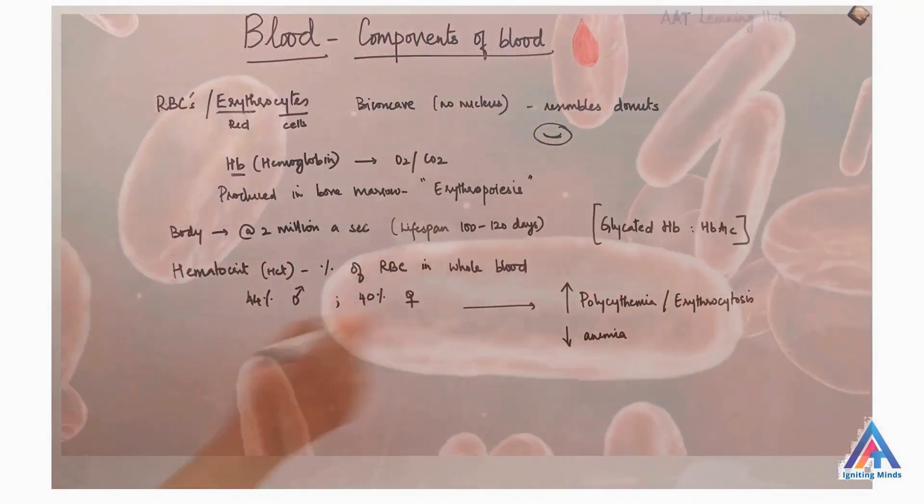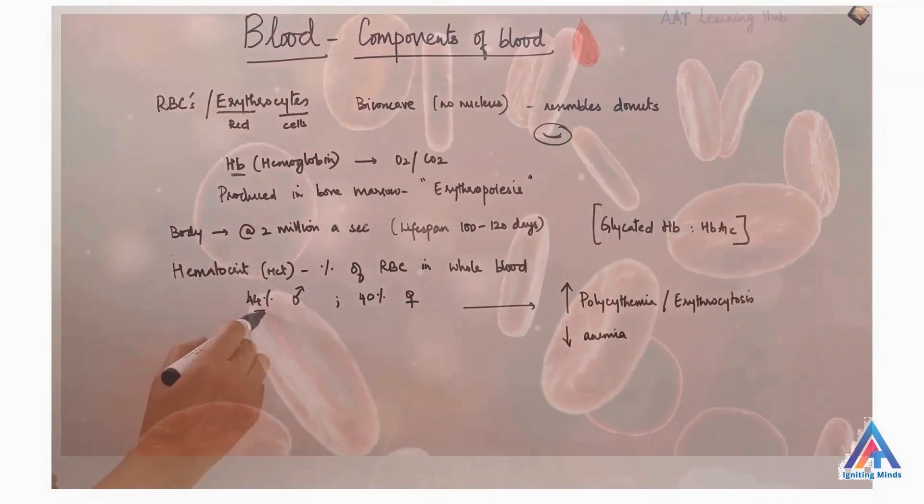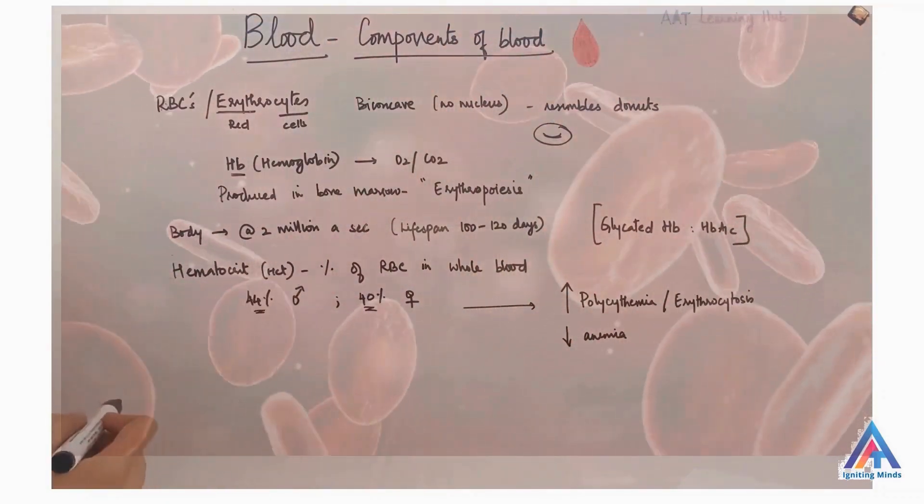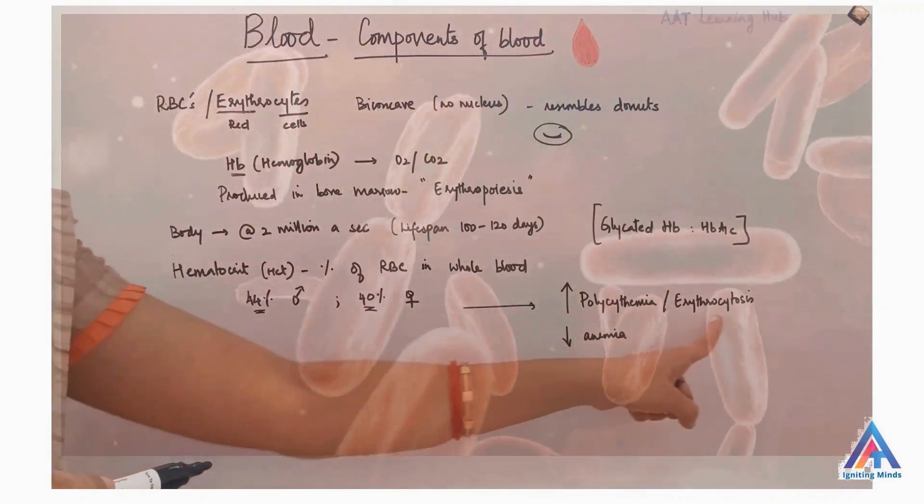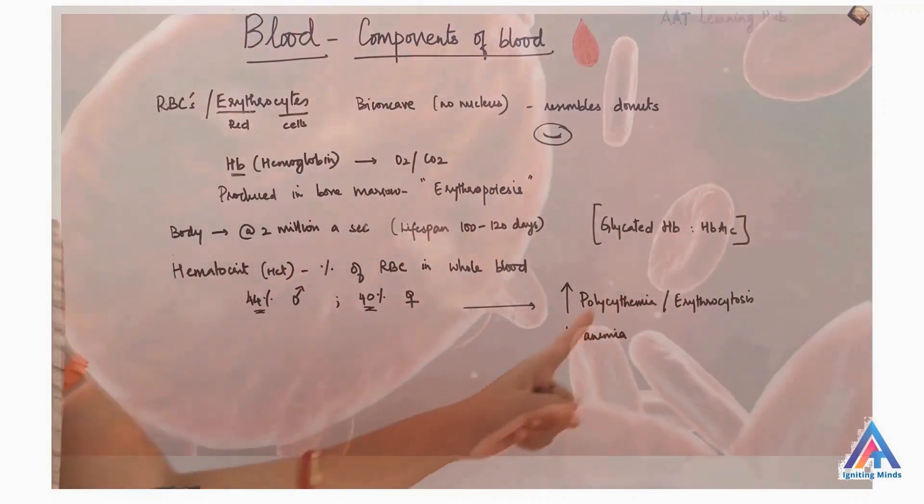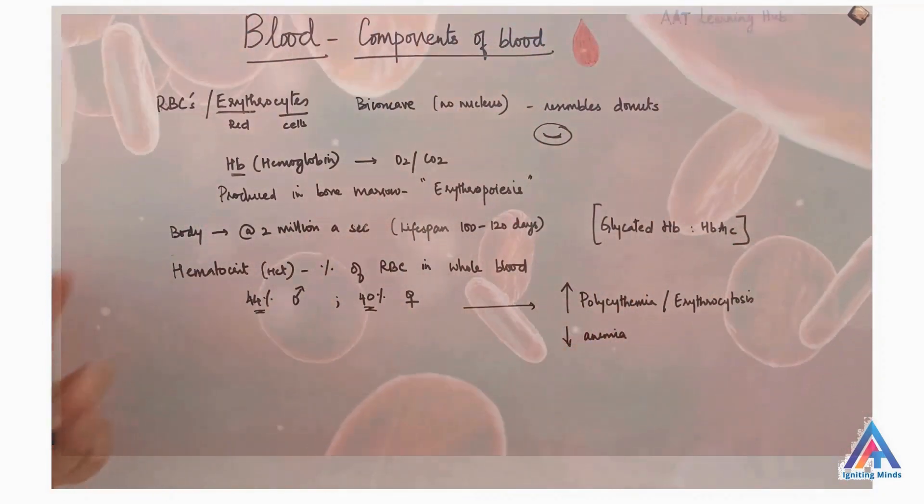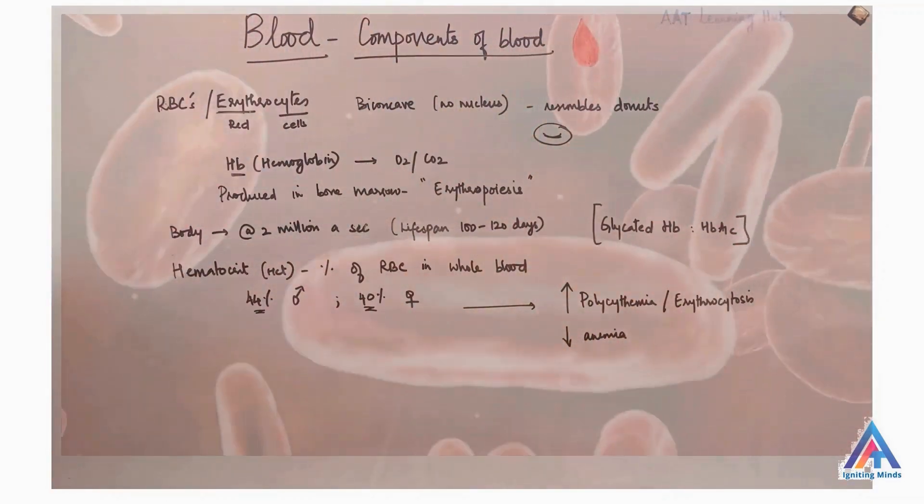Hematocrit is the percentage of RBC in whole blood. It is about 44% in males and 40% in females. An increase in hematocrit leads to polycythemia or erythrocytosis. Decreased count leads to anemia.